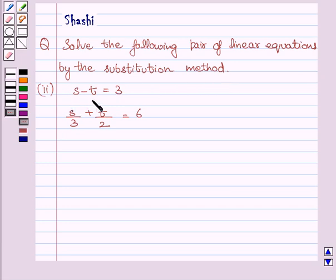First equation is s minus t is equal to 3 and the second equation is s upon 3 plus t upon 2 is equal to 6.